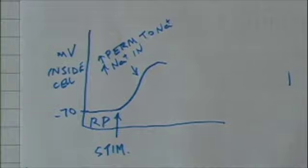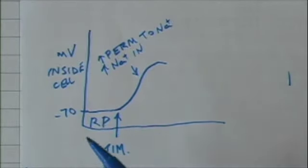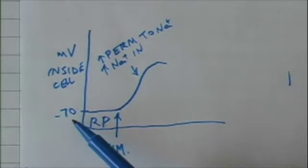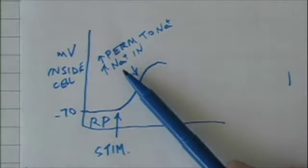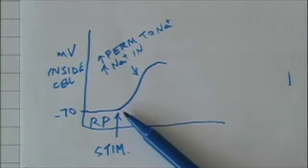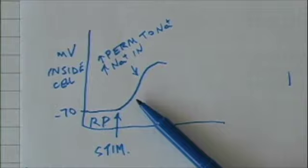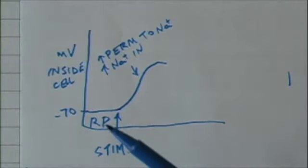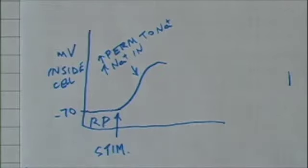As sodium moves in, it becomes less and less negative. Think of it this way: pretend that it's minus 70 millivolts inside the cell because there's an excess of 70 negative charges. If you bring one more sodium in, now the negativity is minus 69. Two sodiums in brings it up to minus 68, and so forth. Now of course that's terribly misleading—there are millions and trillions of negative charges inside the cell.